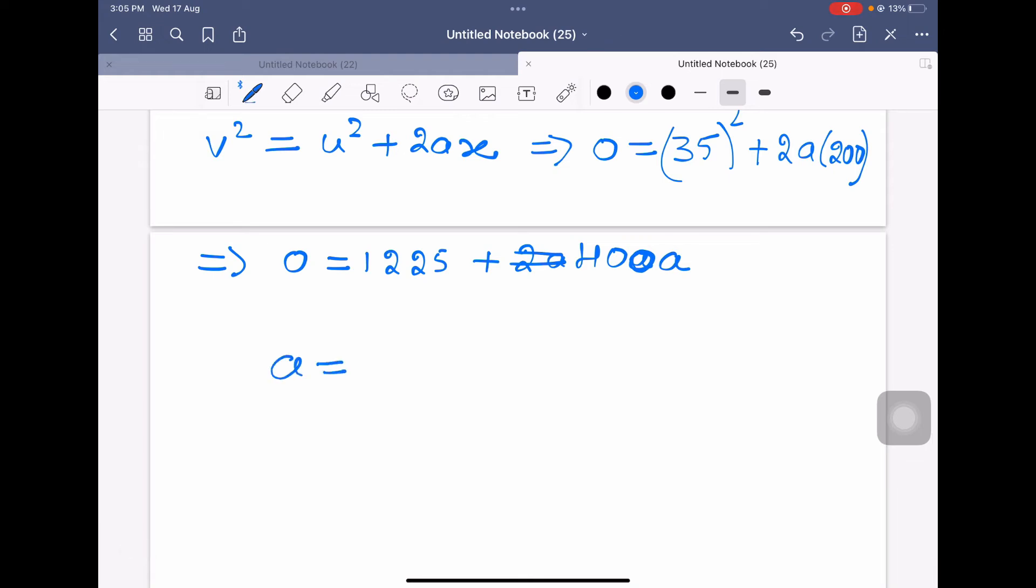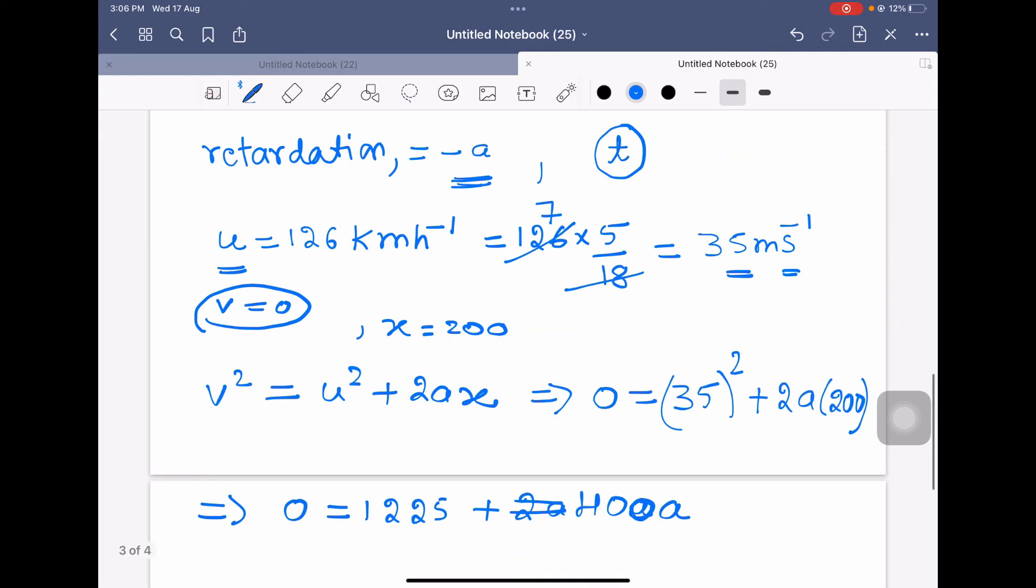A equals minus 1225 divided by 400. 1225 divided by 400 is approximately 3.06. So acceleration is minus 3.06 meters per second squared.